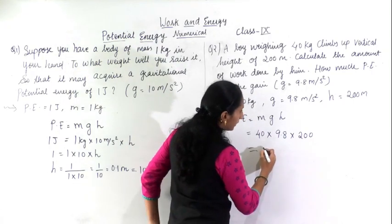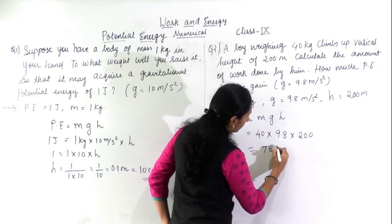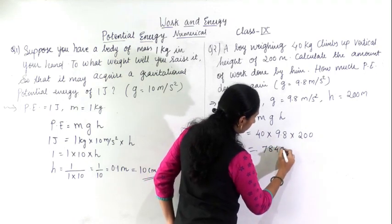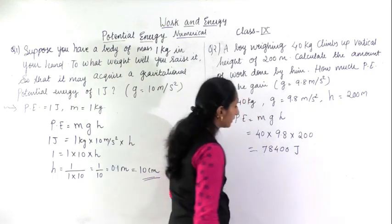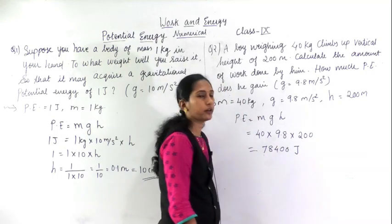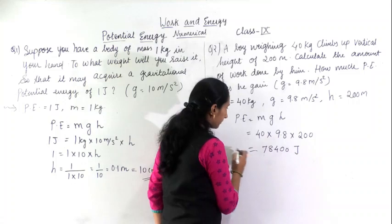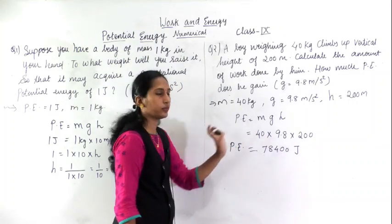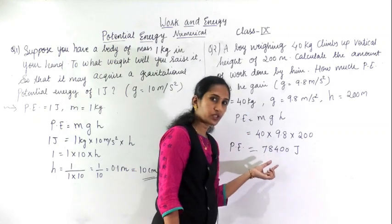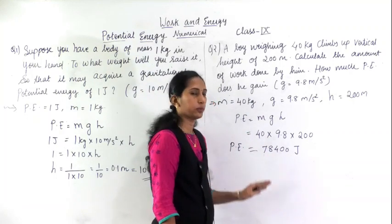By solving this, you will get 7, 8, 4 and these two zeros - 78,400 joules. This is the potential energy you are getting by solving this. Again, once you check this answer and confirm it.